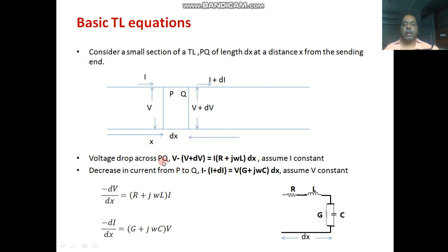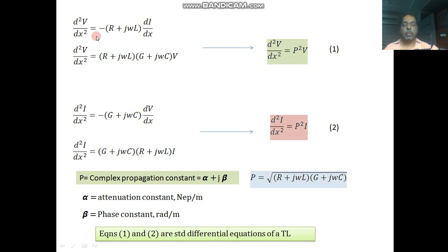Similarly, when we calculate current drop, we write i minus (i plus di) equal to voltage multiplied by admittance, which is G plus jωC. Again, G and C are defined per unit length, so for total length dx we get conductance G·dx and susceptance jωC·dx. When calculating voltage drop we assume current constant, and for current drop we assume voltage constant. From these expressions: −dv/dx = (R + jωL)·i and −di/dx = (G + jωC)·v.